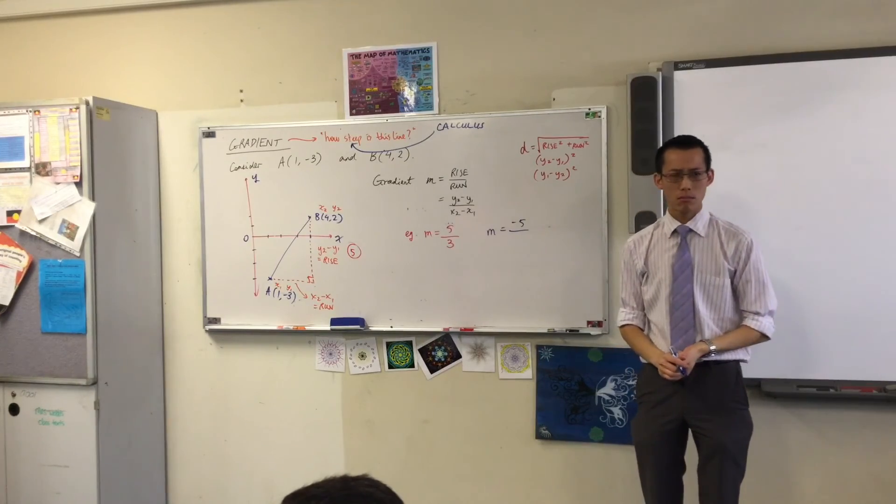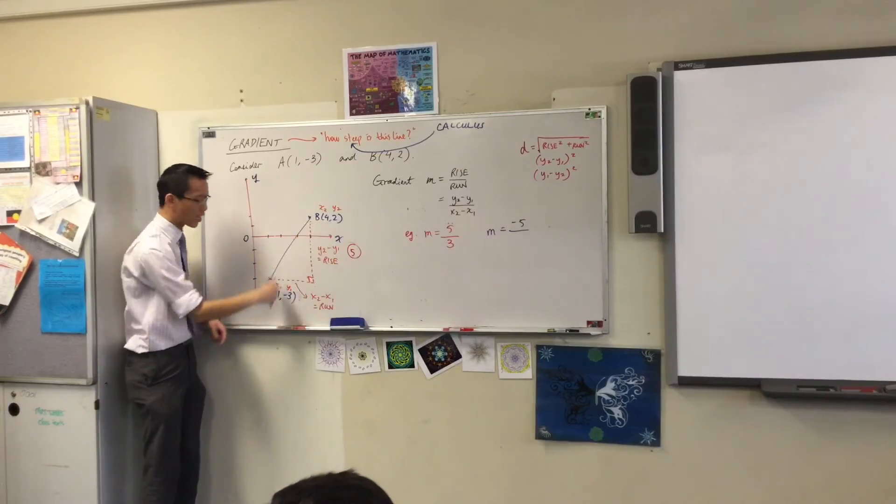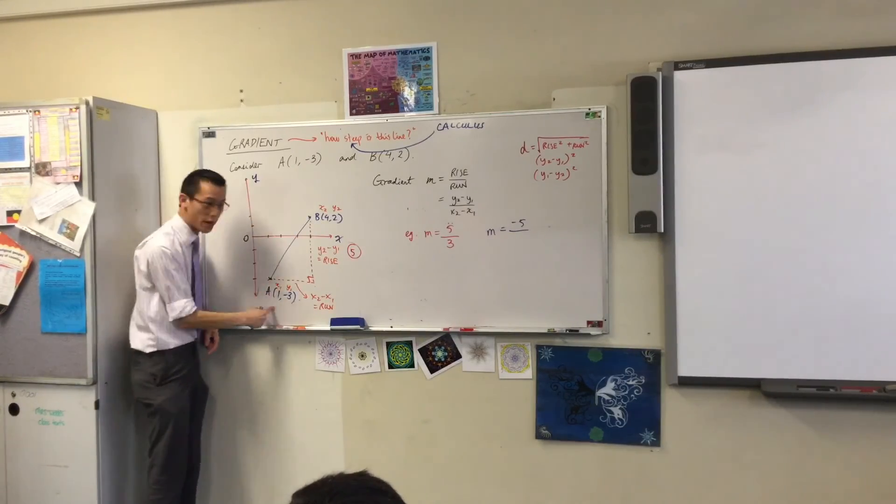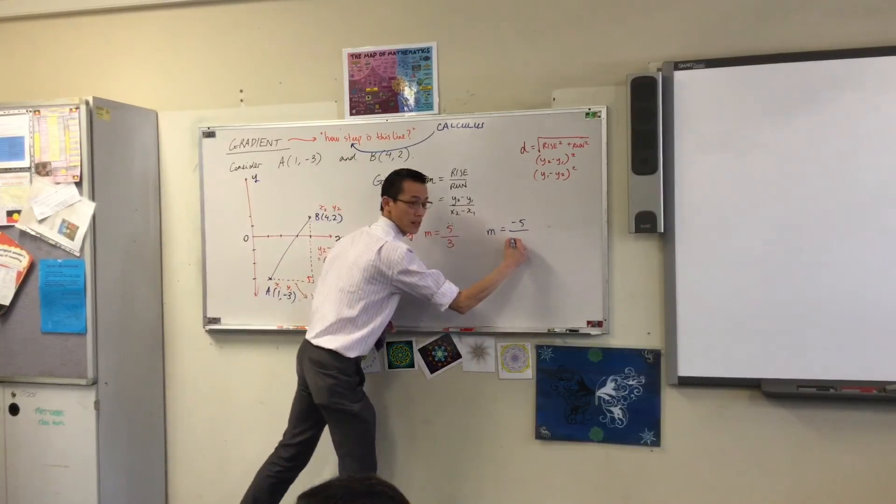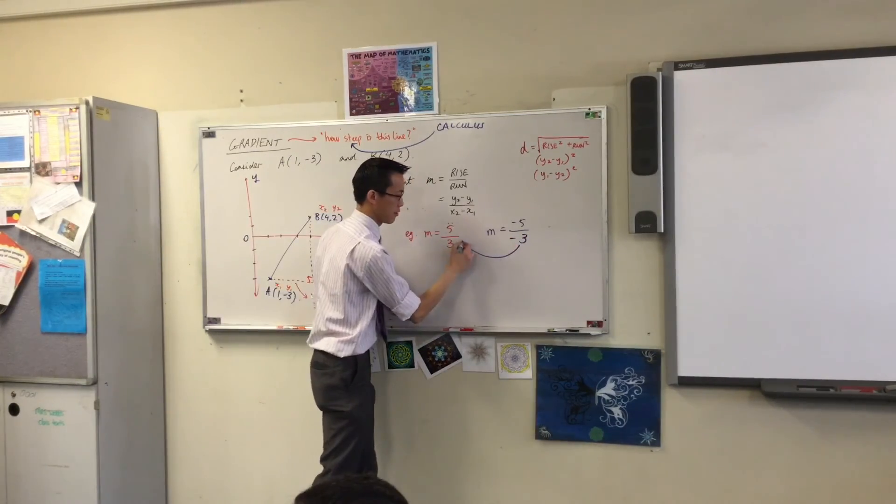What's the run? Minus 3. Because I'm doing it in reverse order, I'm now going to say instead of 4 take away 1, I'm going to go 1 take away 4, which is negative 3. But hold on. That's the same thing.